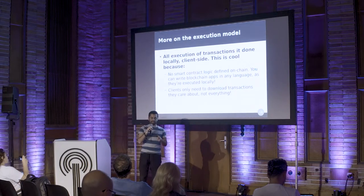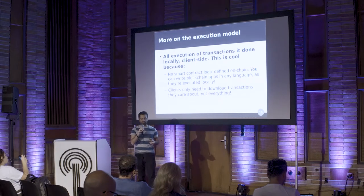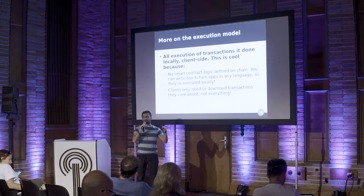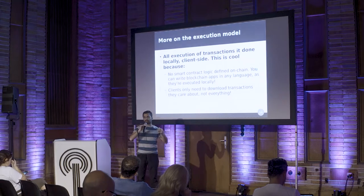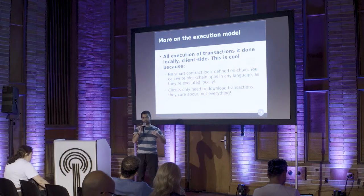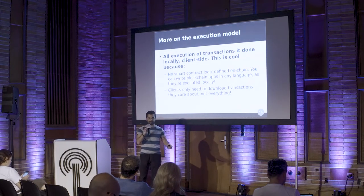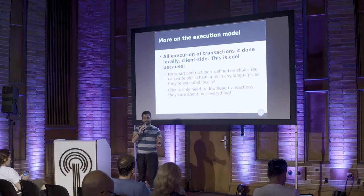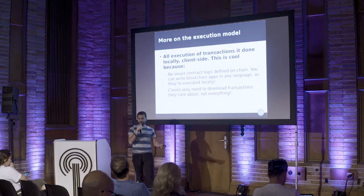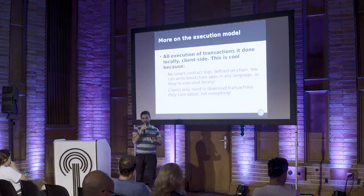If we can simplify the problem of block verification to data availability verification, we can achieve similar scale-out properties to peer-to-peer file sharing systems like BitTorrent or IPFS. This is also interesting from the perspective of the execution model. As I mentioned, there is no on-chain execution — all of the state of the applications on the chain are computed locally by clients. In this model, people can define their own applications, but the code of their applications isn't posted on-chain. It's simply distributed off-chain to the nodes that want to use the application. And because the logic isn't defined on the chain, you can write the application in any language, since they're executed locally by clients. The client only needs to download the transactions relevant to the applications they're using.